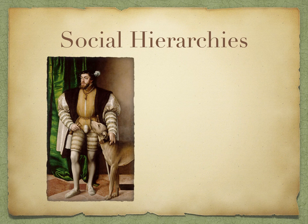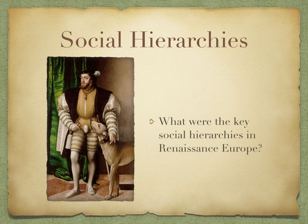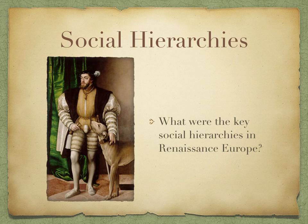Then we get to the social hierarchies section of the chapter. The questions McKay addresses are: what were the key social hierarchies in Renaissance Europe? In other words, how is society organized, how is it ordered, who's in charge, and why? We'll spend some time on this and talk about gender hierarchies, class hierarchies, and racial hierarchies. This is one of our first introductions into the social history of the course, which will be a recurring theme.